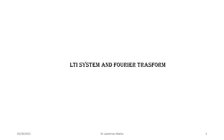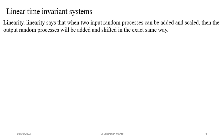First, let's look at the linear time invariant system and how we define the Fourier transform intuitively. Simply, if you are taking a linear time invariant system, the first word is linearity. Linearity says that when you take two input random processes they can be added and scaled — we are talking about a linear combination of any two input random processes.